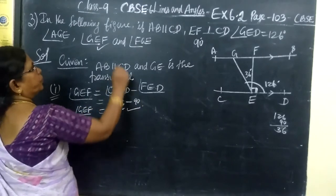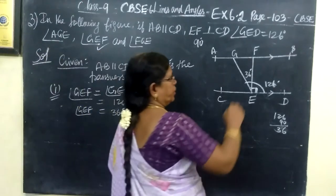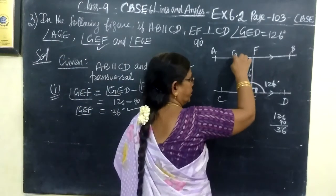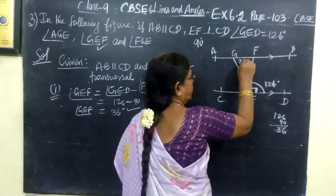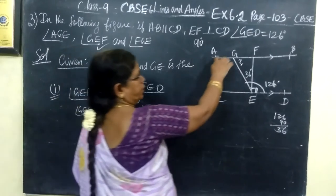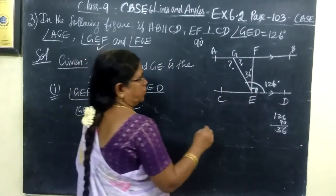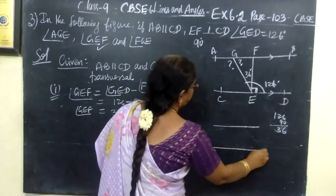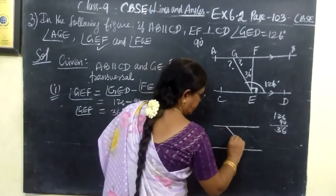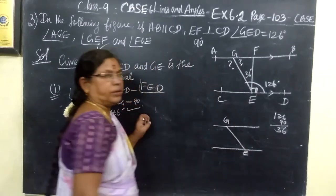Then next you find angle FGE. Where is FGE? This is question mark. And AGE, this is also question mark. Now you draw separately. This is GED, the transversal. GED is the transversal.